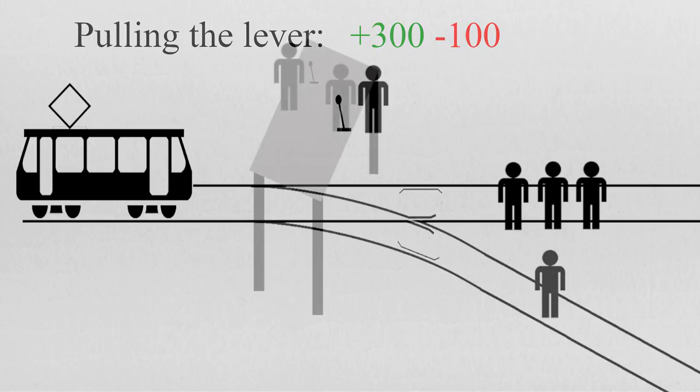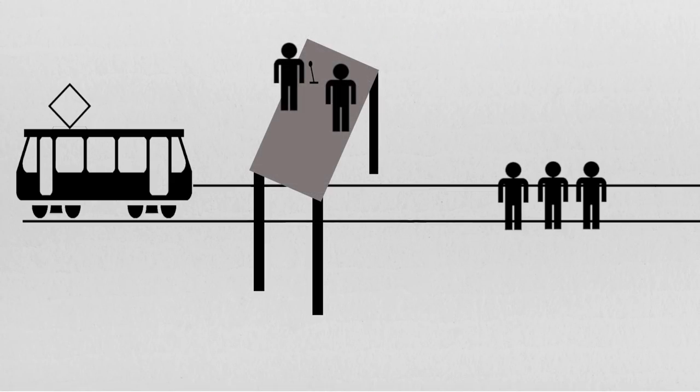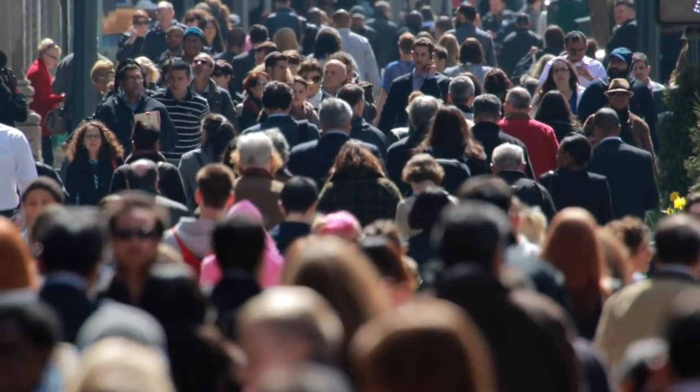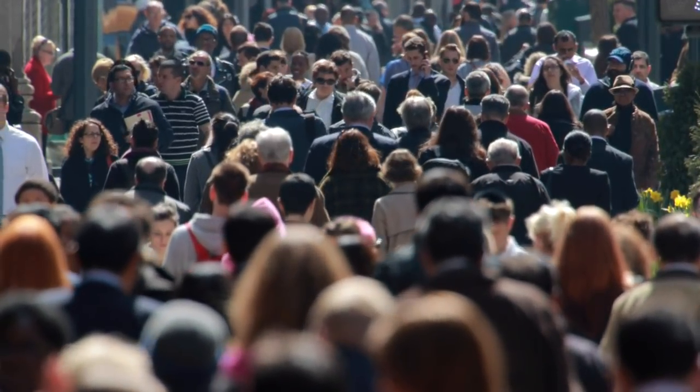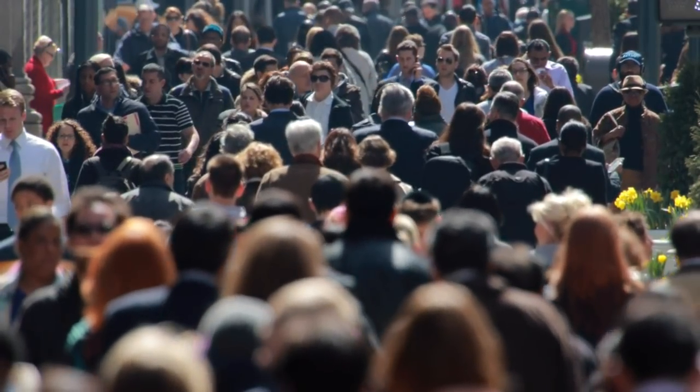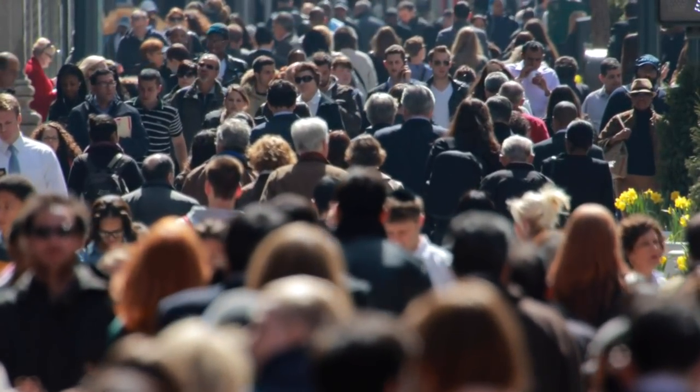Now let's look at the switch case. If one decides to pull the switch and sacrifice a person to save three, and like the standard trolley problem case, we intuitively recognize that he would quite likely be held liable for murder. Indeed, when being asked the dilemma, there is no mention of what other members of society know. In particular, they don't know that if one pulls the switch, he has a 100% chance of stopping the trolley.